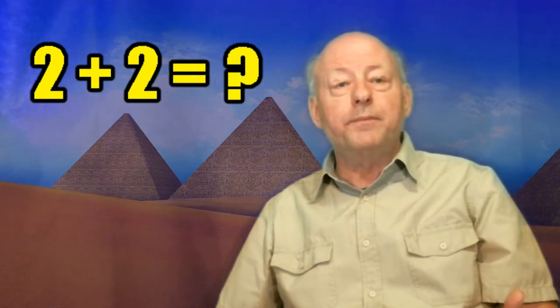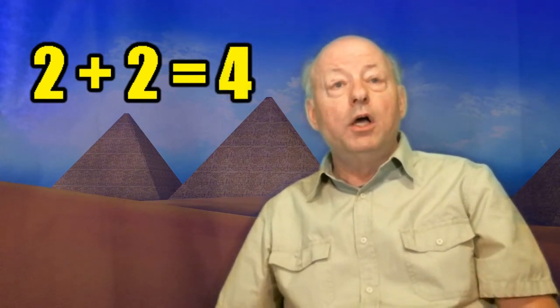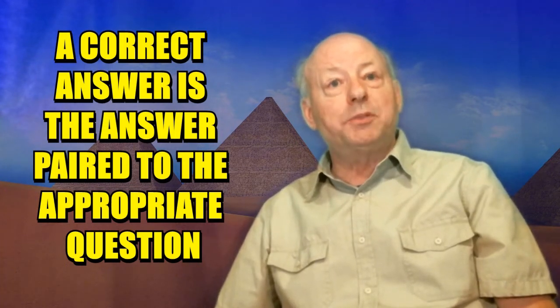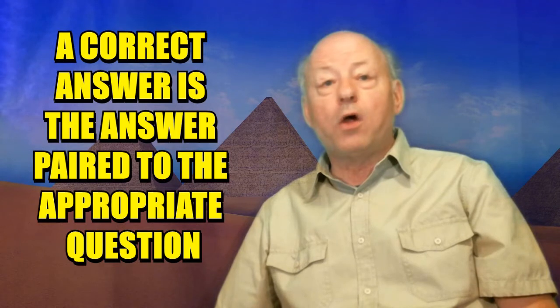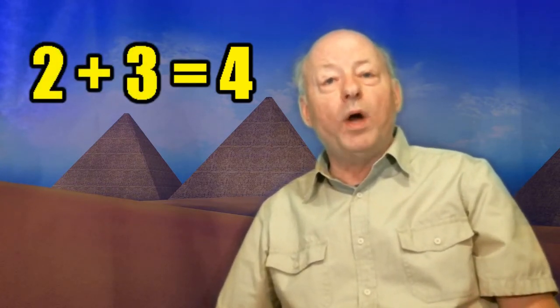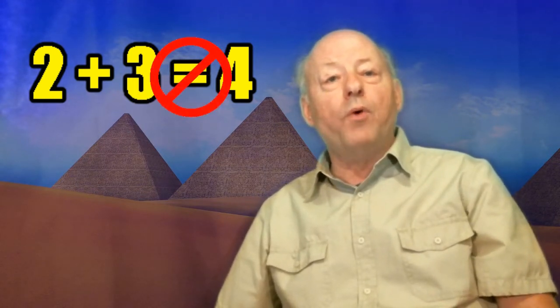Here is a question: 2 plus 2 equals what? The obvious answer is 4. So a correct answer is one that is paired with the appropriate question. 4 is a wonderful correct answer to that specific question, yet 4 may not be a correct answer if it is paired with a different question. All by itself, 4 is just 4. As an answer, it has to be paired with the appropriate question for 4 to be a correct answer.